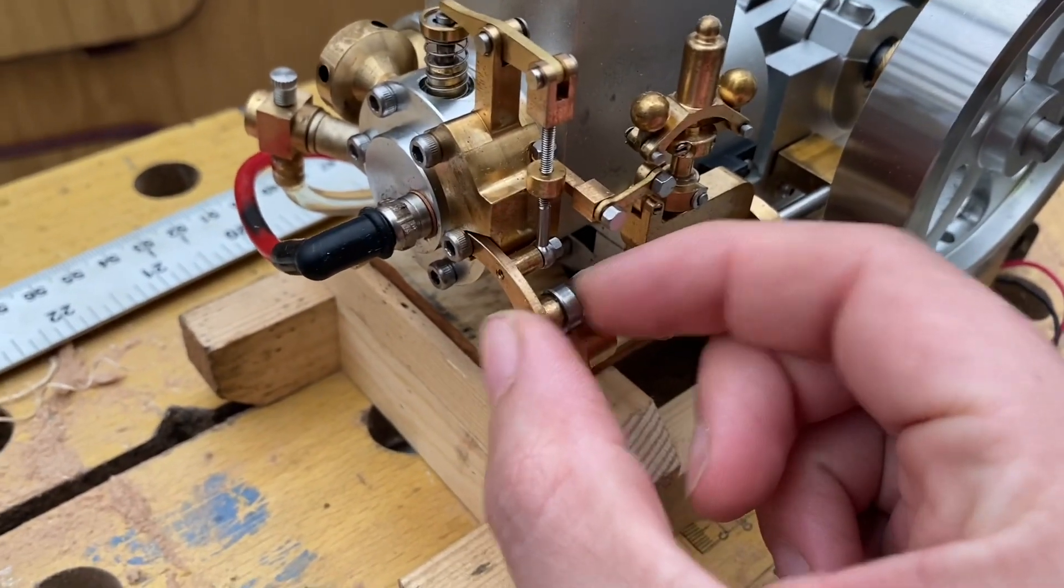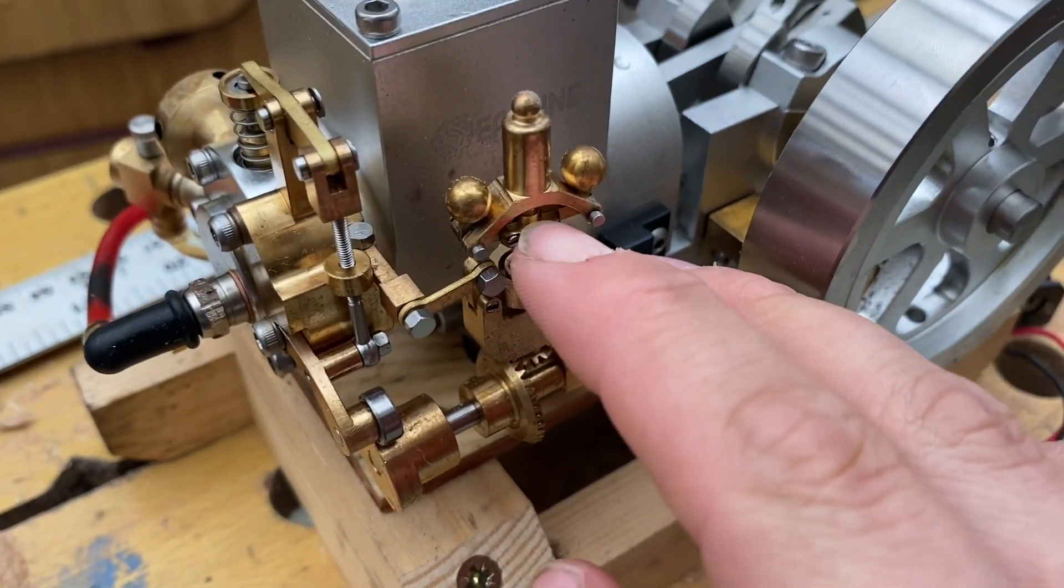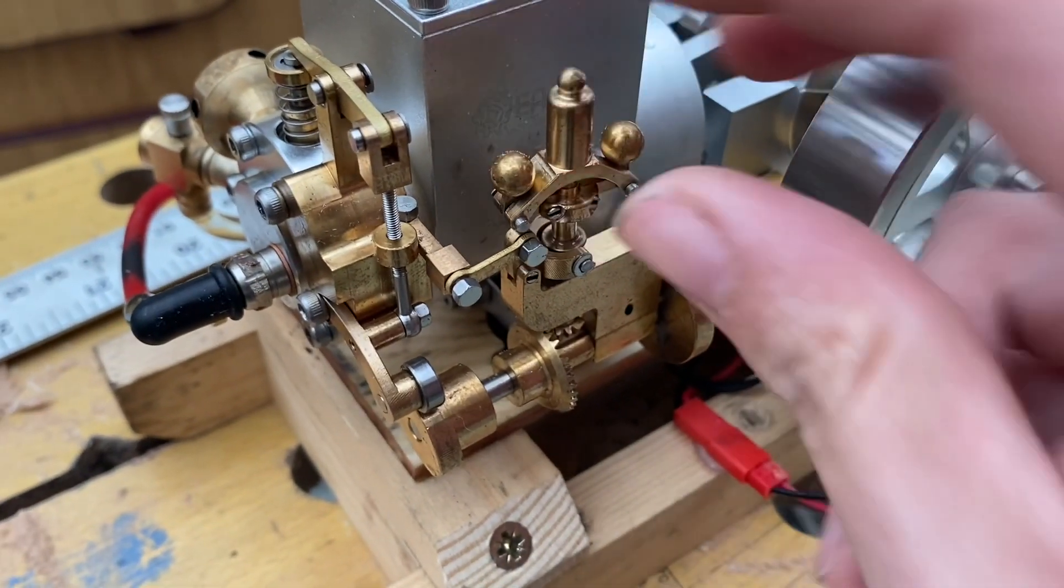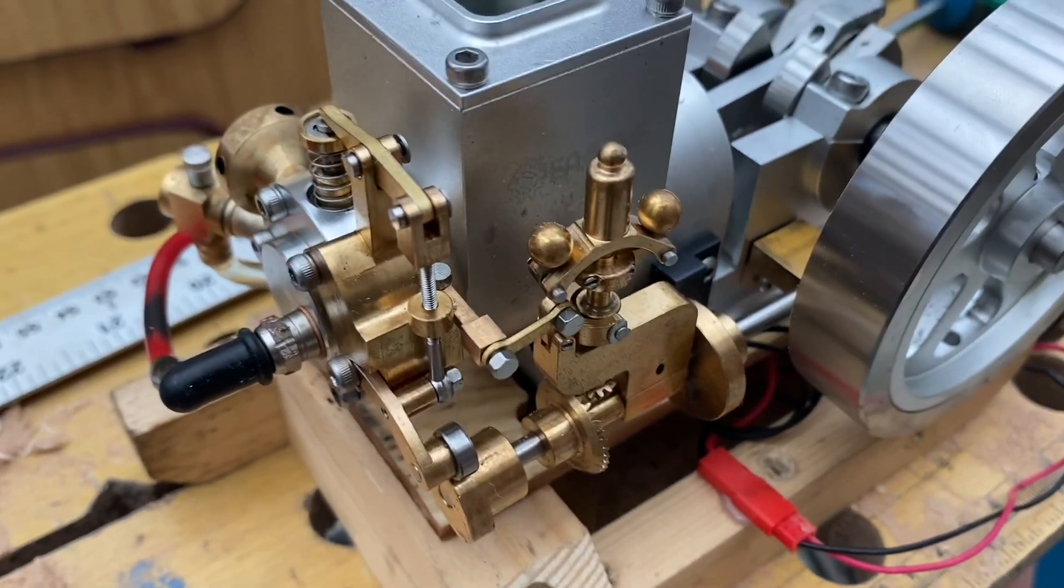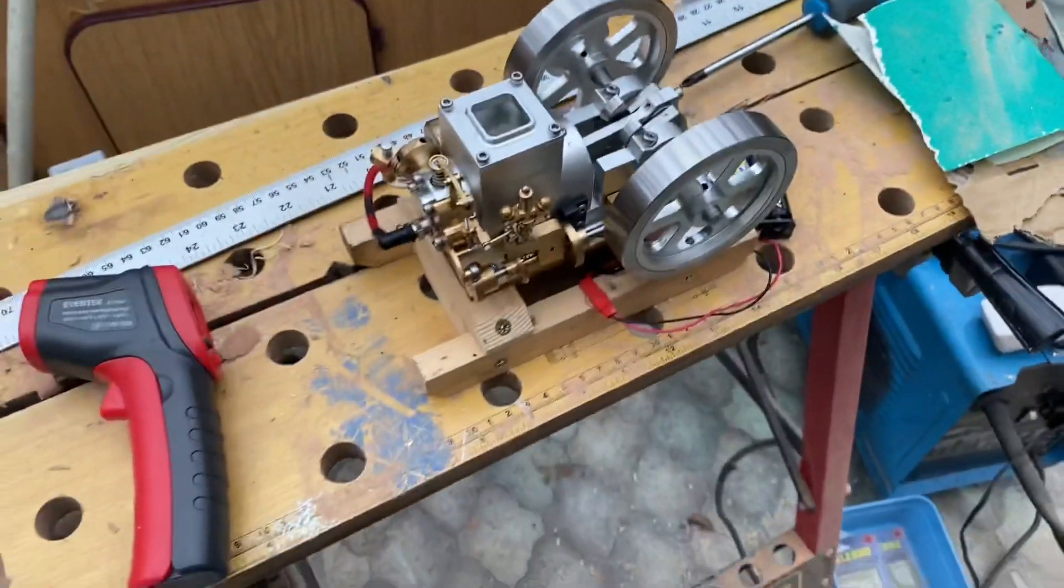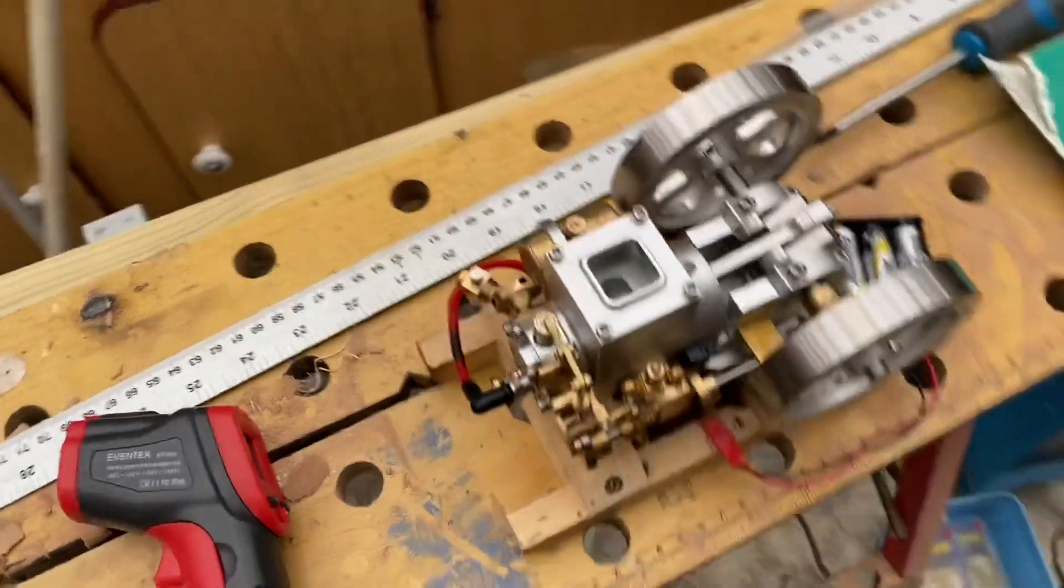So this is now much more slack, and it means that when the governor flicks out it actually properly engages with this little part here, which should mean that it misses more often, in theory anyway. So we're going to fire it up now and just see what she runs like.